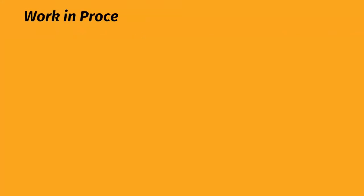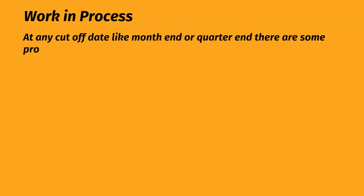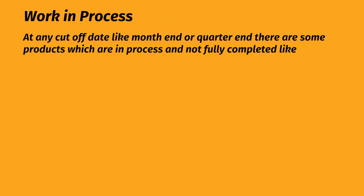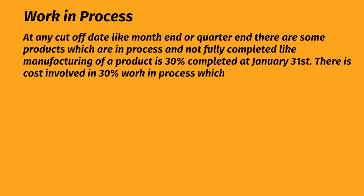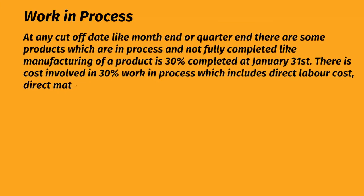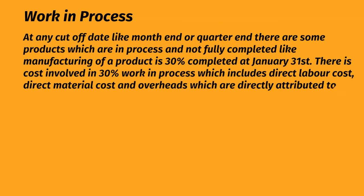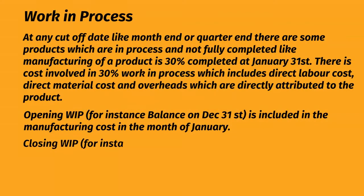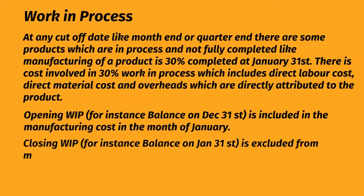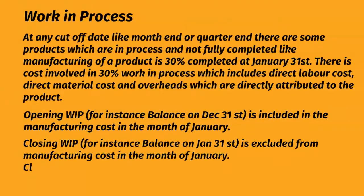Work in Process (WIP). At any cutoff date like month end or quarter end, there are some products which are in process and not fully completed — for example, a product that is 30% completed at January 31st. There is cost involved in this 30% WIP which includes direct labor cost, direct material cost, and overheads directly attributed to the product. Opening WIP, for instance the balance on December 31st, is included in manufacturing cost in January. Closing WIP, for instance the balance on January 31st, is excluded from manufacturing cost in January. Closing WIP is disclosed in balance sheet current assets.